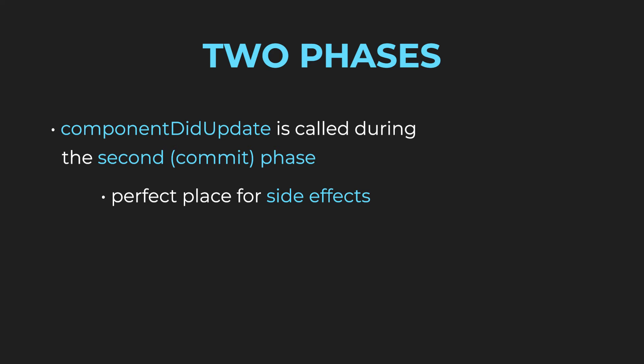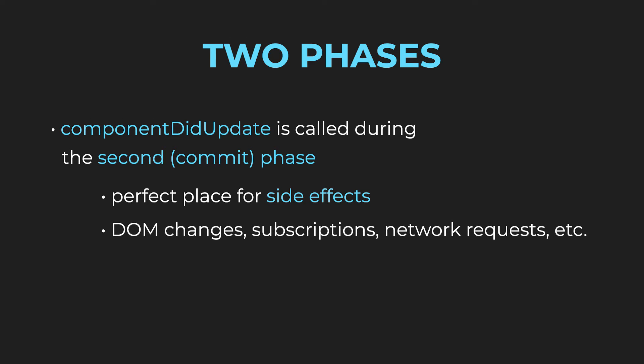Because side effects are allowed during the commit phase, ComponentDidUpdate is the perfect place for them. ComponentDidUpdate runs after everything else has finished and allows us to make DOM changes, subscriptions, network requests, and even state changes. But the state change would have to be wrapped in a condition, otherwise it would result in an infinite loop.